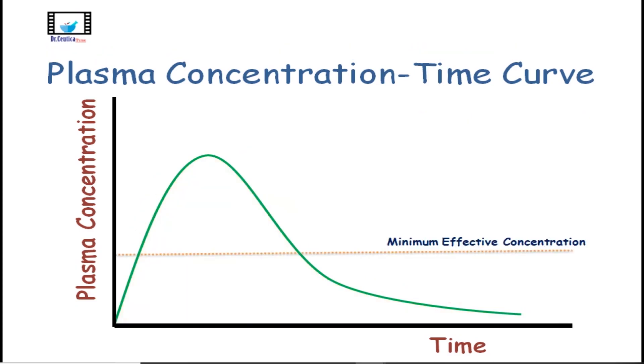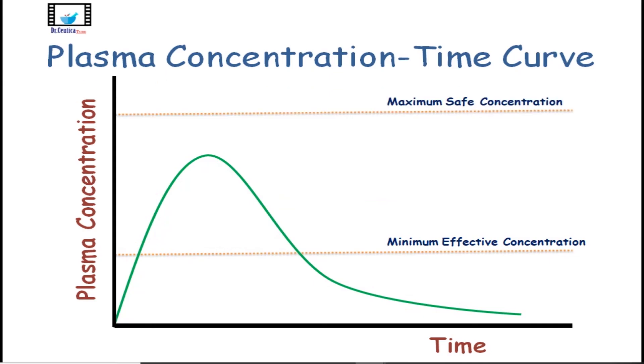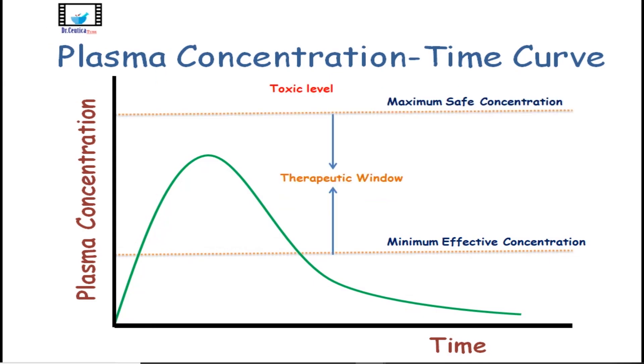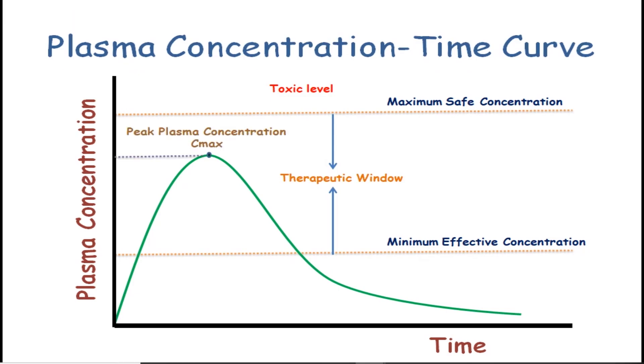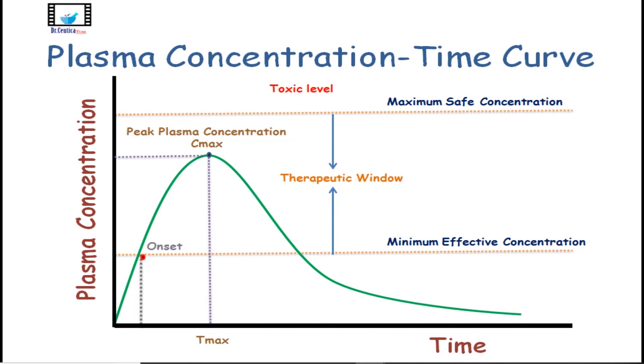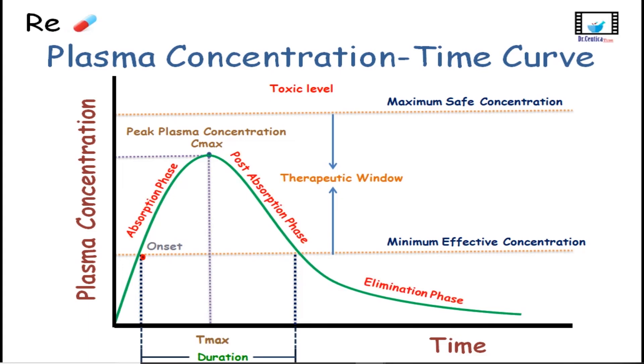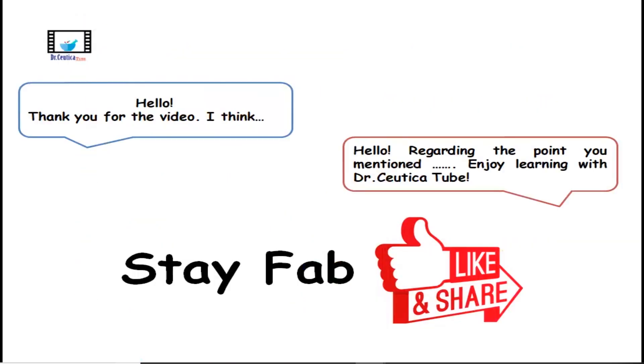Today, we understood what is the plasma concentration time curve and what different points on it mean: the minimum effective concentration and the maximum safe concentration, the therapeutic window as well as the peak plasma concentration or the C-max together with the T-max, in addition to onset of action and the duration of action. With this, we come to an end to today's video. Hope you enjoyed it. Till next time, stay fabulous wherever you are. Bye.